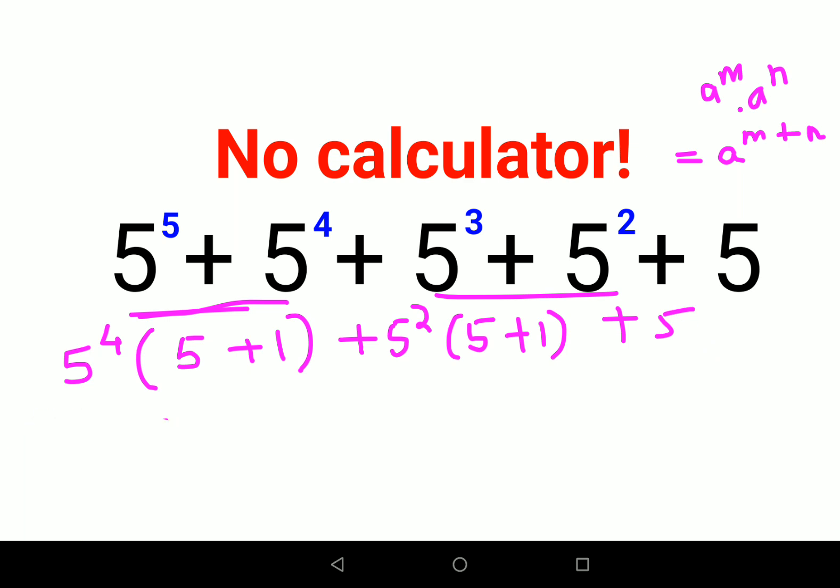Now let's try and see what we can take out from these two. Here we can take out 5 squared times (5 plus 1), and I am left with 5 squared plus 1 plus 5.